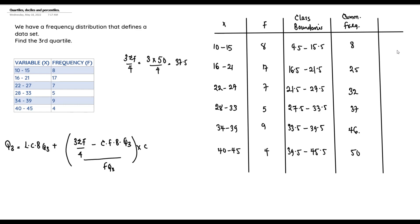Looking at the cumulative frequencies to locate the 37.5 position: 8 + 17 = 25, 25 + 7 = 32, 32 + 5 = 37, 37 + 9 = 46. So the 37.5 position data falls in this class region — I'll use the red marker to highlight this region.